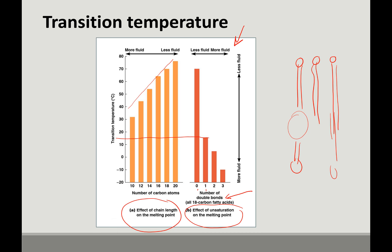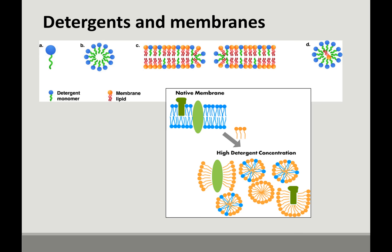The last thing I want to talk about is the effect of detergents on membranes. So hopefully in general biology, you learned that a detergent is something we call amphipathic, which means it has both a polar and a nonpolar region. And that's just like a phospholipid. A polar head and a nonpolar tail.